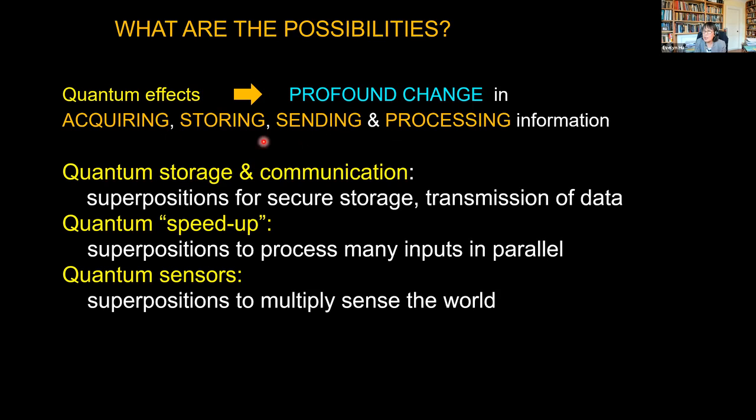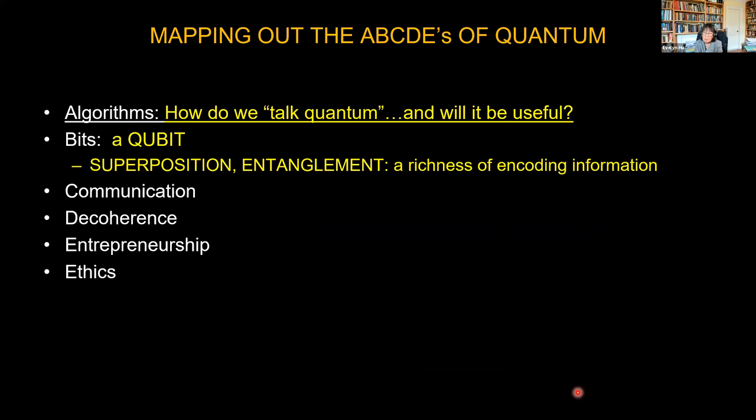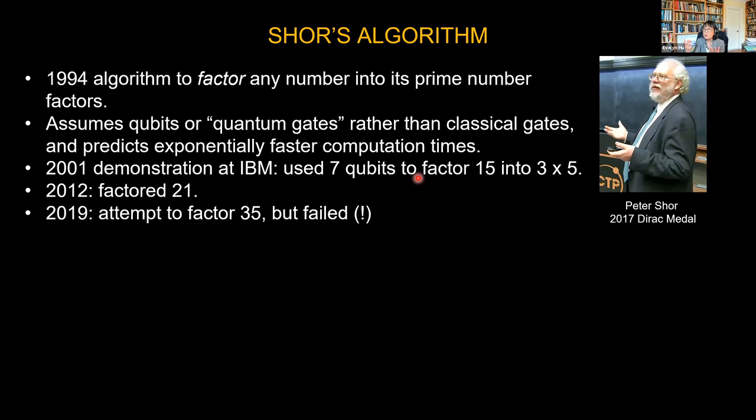These quantum effects, this incredible density of information that we haven't yet been able to exploit, means that the way we deal with acquiring, storing, sending, and processing information is just turned on its head. If it goes faster, higher density information—maybe we could have quantum computing. How do we talk quantum and will it be useful if the information is encoded not in any one individual bit but throughout this entity?